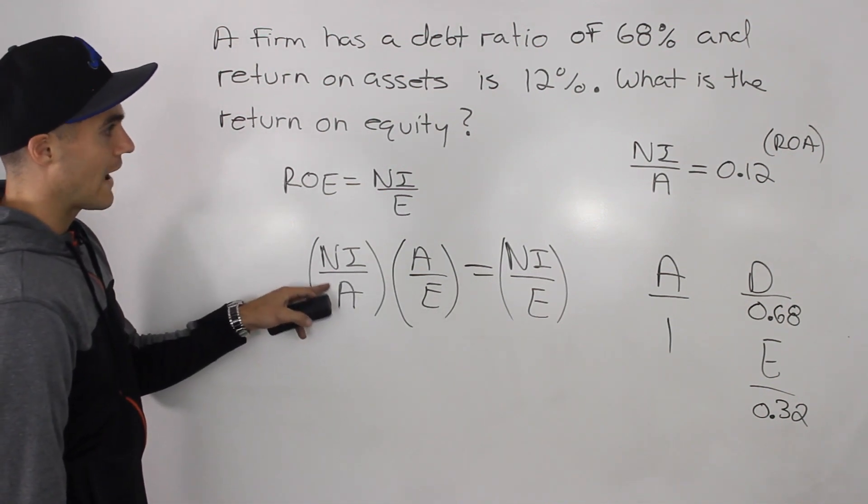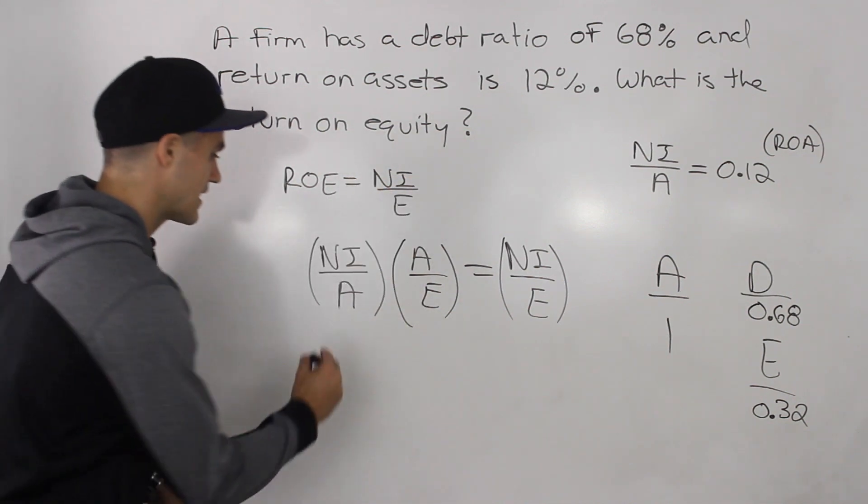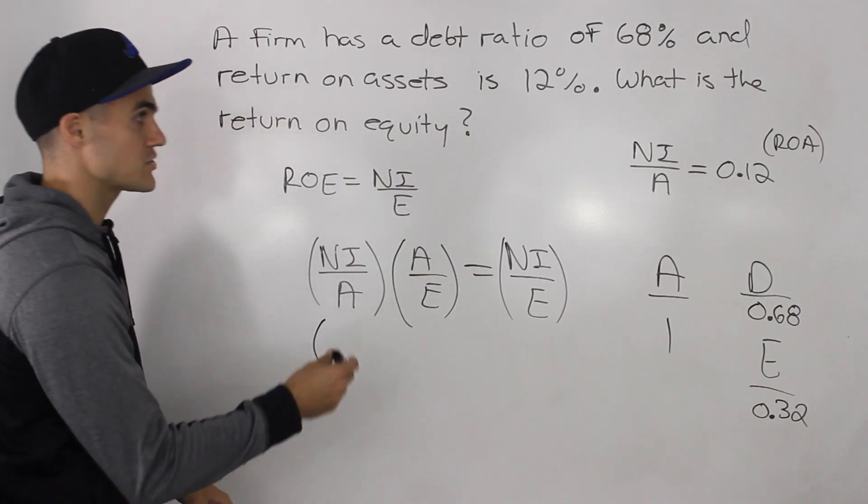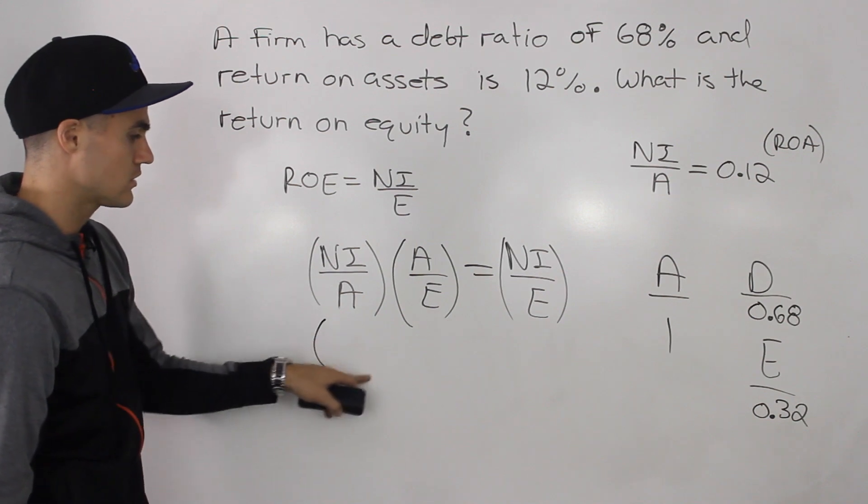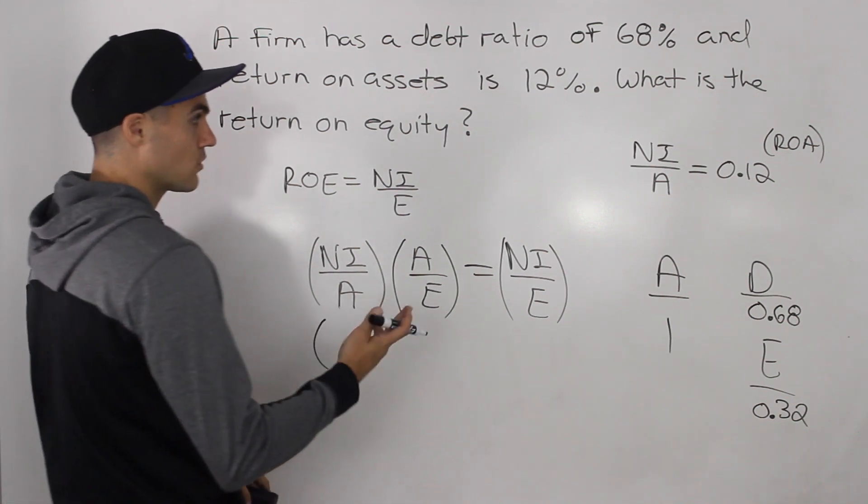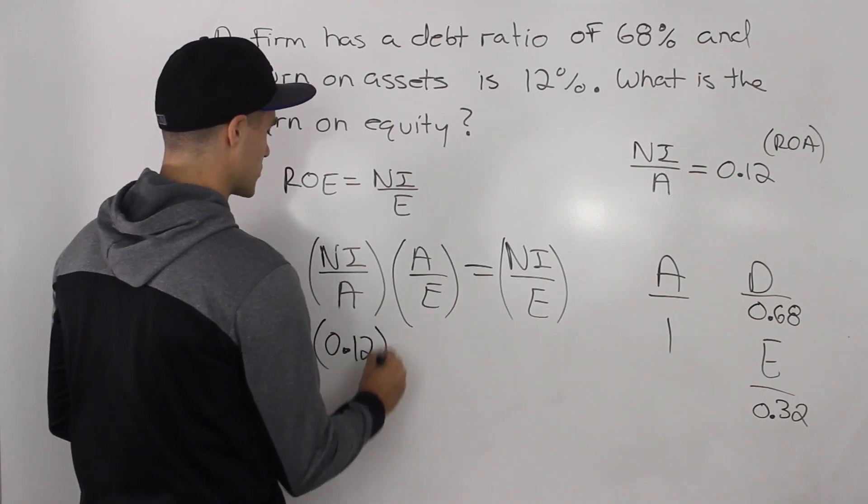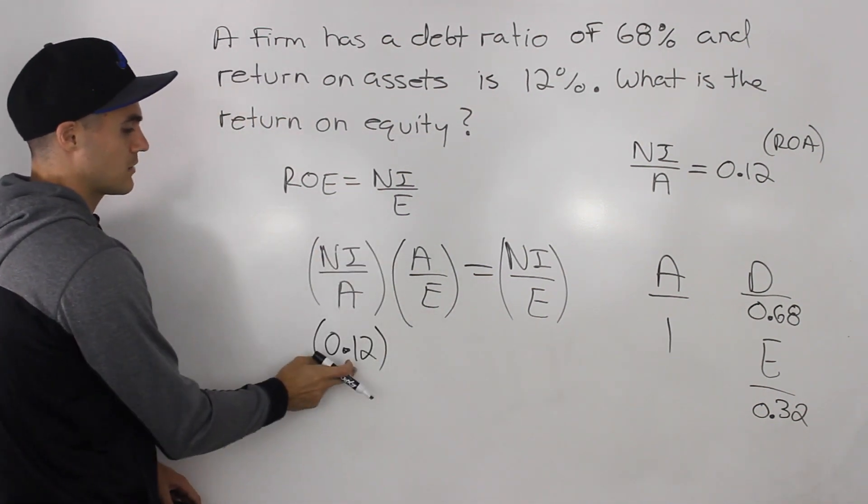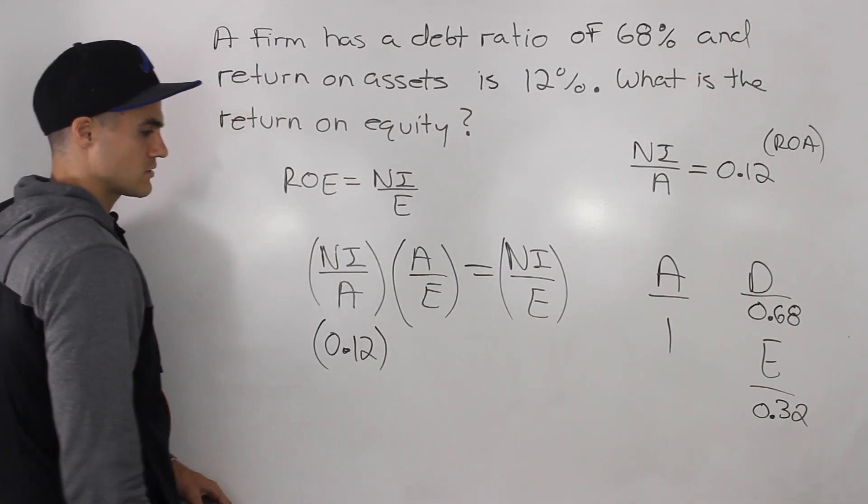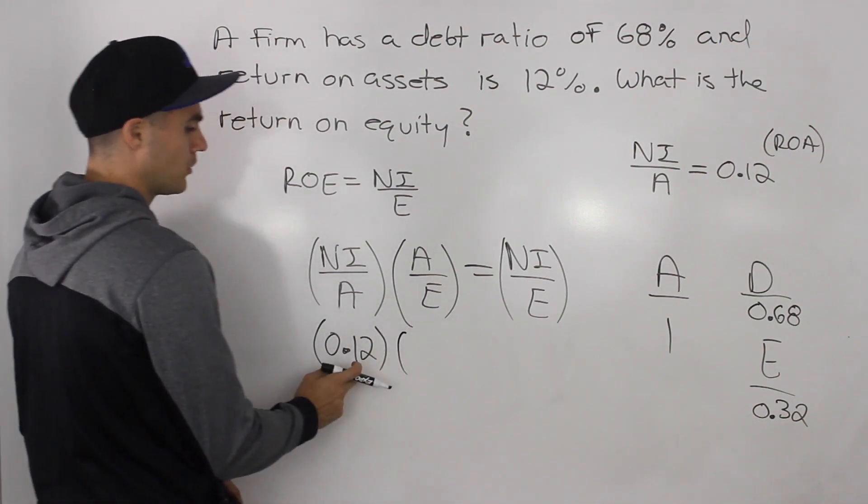Well, net income over assets, that's the return on assets, and that's given as 12% or 0.12. Now here you could input either the percentage or the decimal. Let's input the decimal here. I think the question before when we did in this format, we inputted the percentage. So let's switch it up a little bit. So we got 0.12 here.